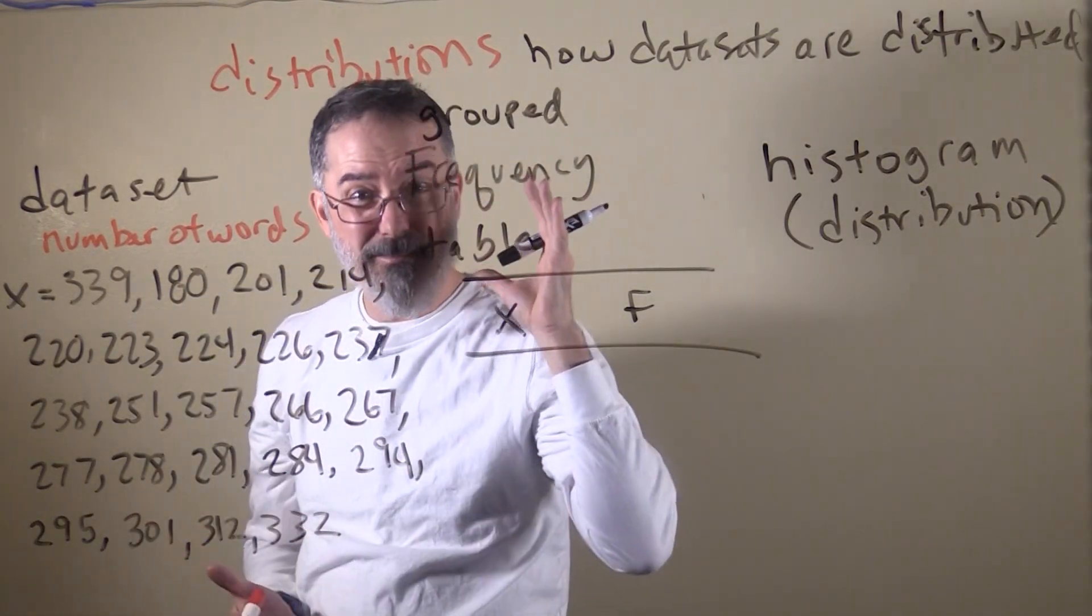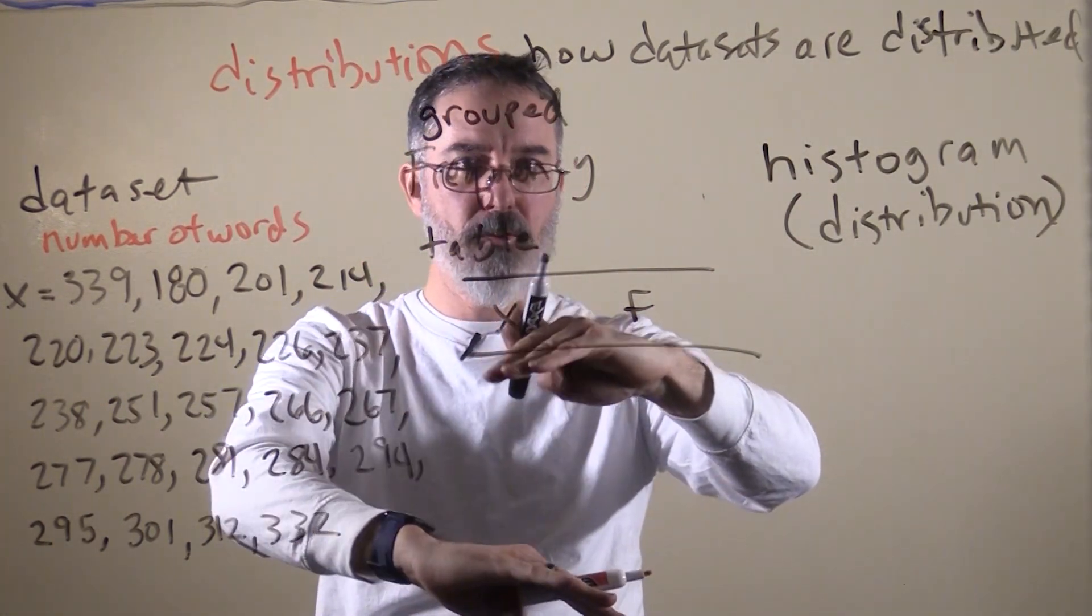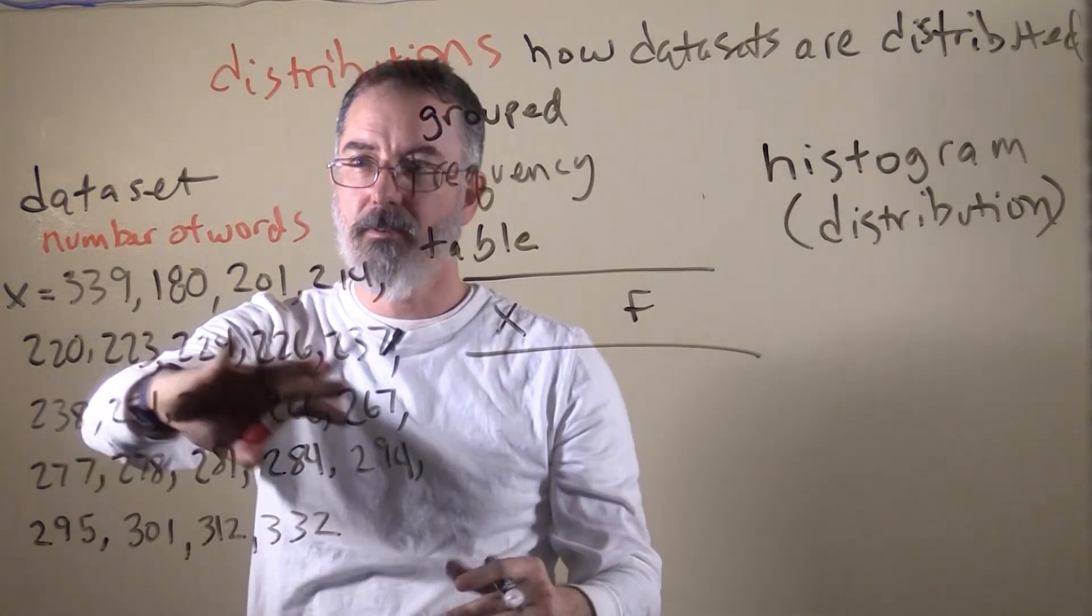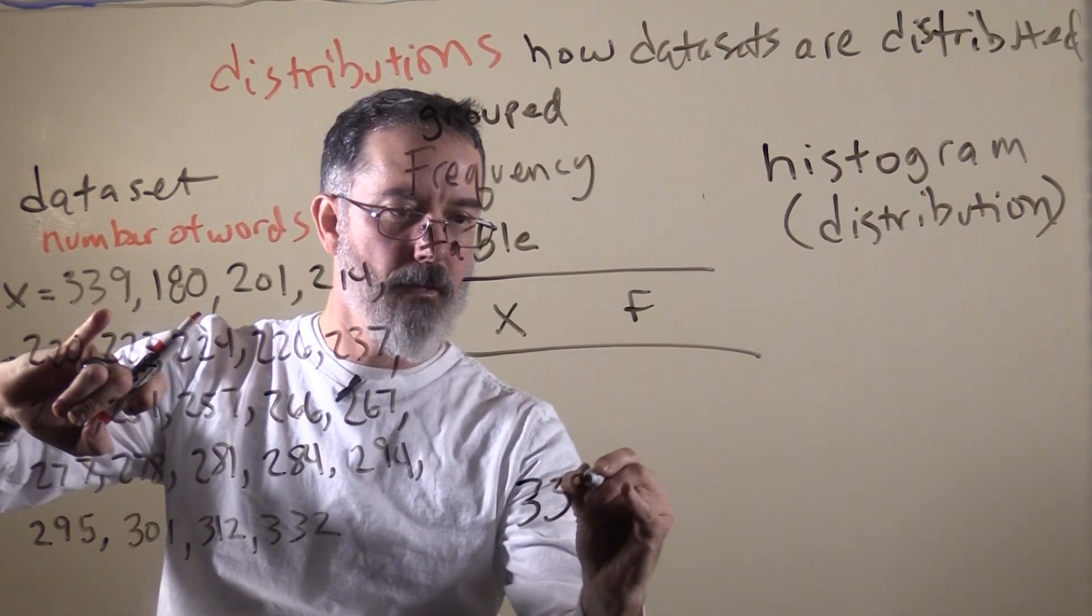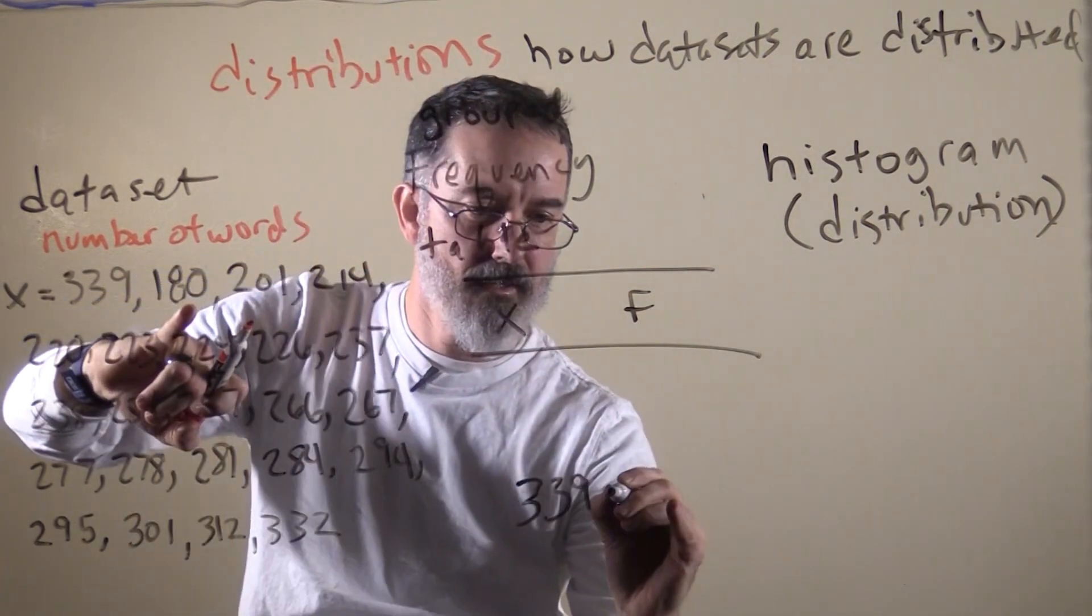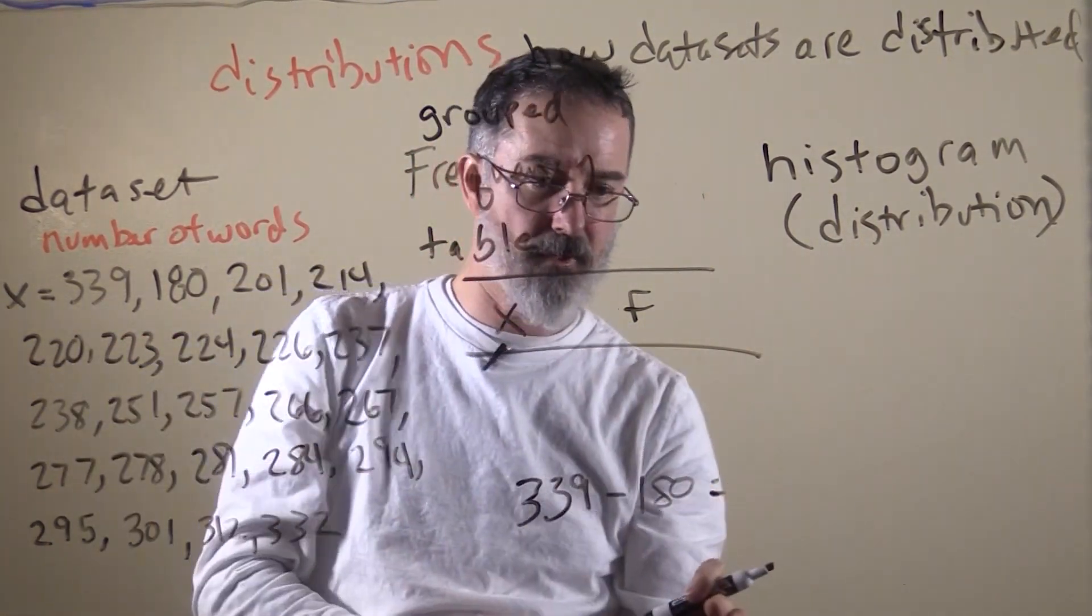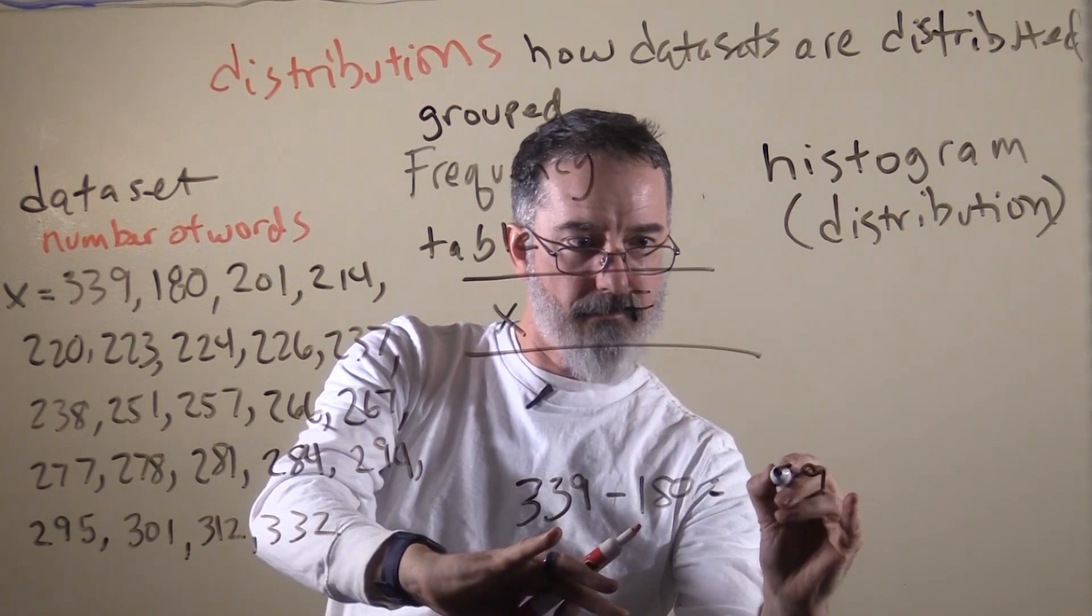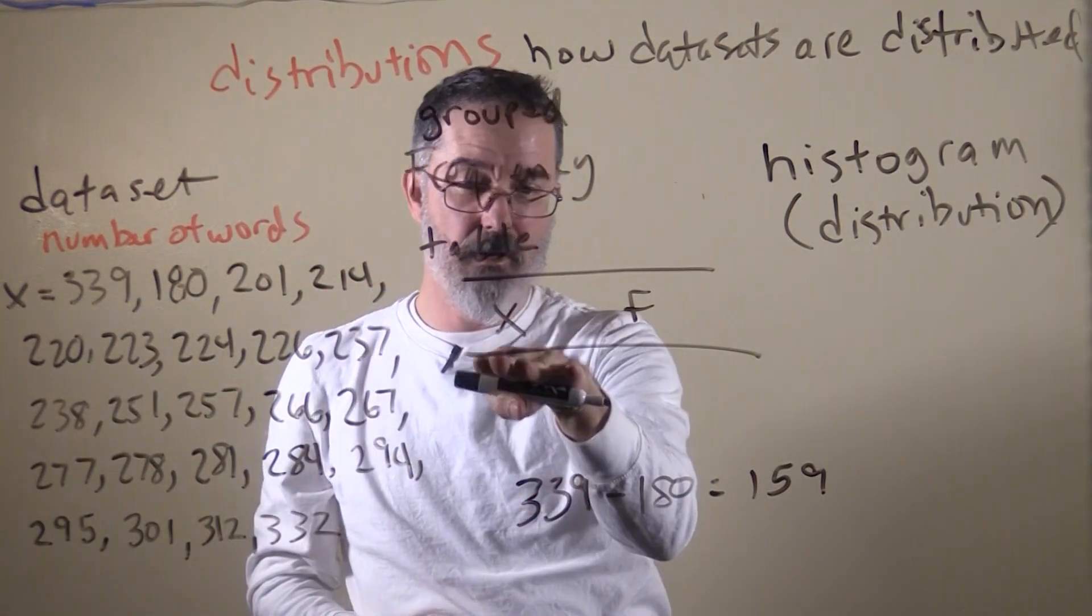So the way we want to set this up is that we are going to create ranges of the number of words, and then we are going to count how many of these are within that range. And we want to do this strategically, so that somebody looking at the table can make sense of it. So we do not want to have too many rows, too many of those groupings, and we want them to be on numbers that are pretty easy for them to understand intuitively. So for here, the highest number for this top category is 339, and the very bottom is 180. So we have to have categories that include all of those numbers. So what I am going to start off doing is I am just going to figure out the difference between these two, because that is the range we have to fit in between here.